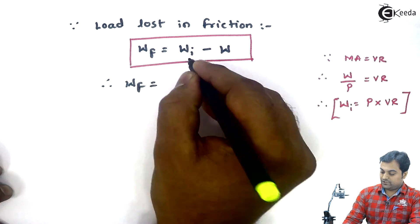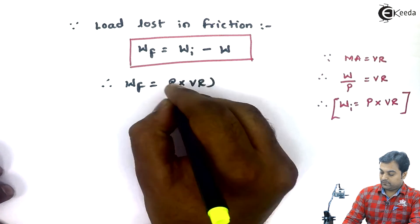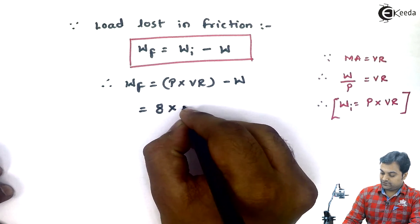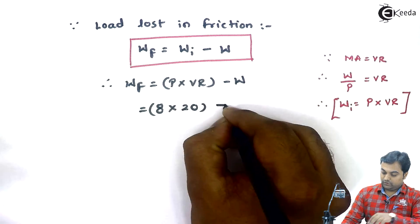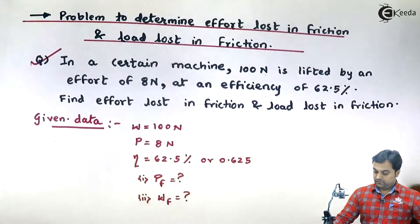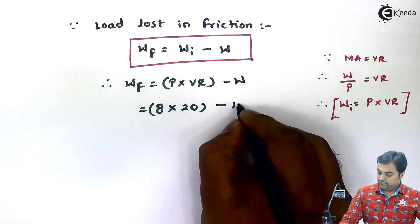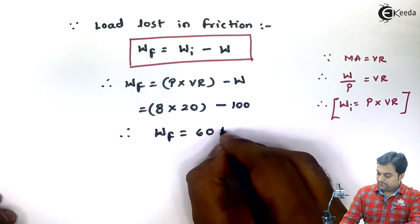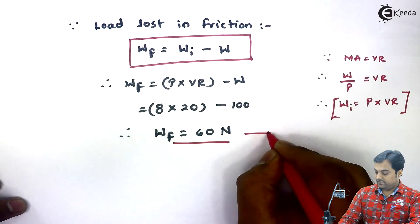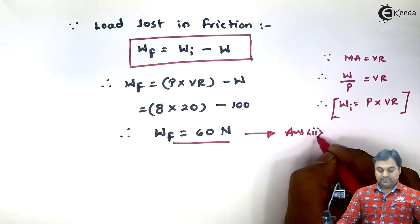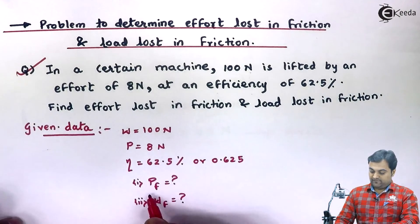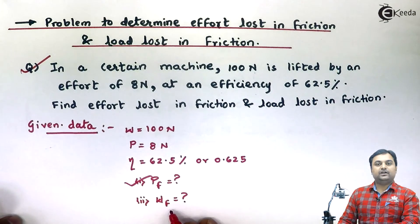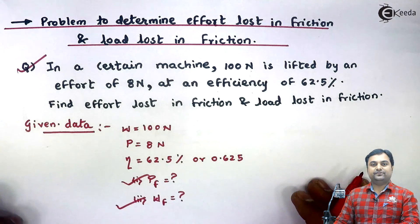Therefore load lost in friction = P × VR minus W = 8 × 20 minus 100 = 160 minus 100 = 60 Newton. So the second answer is load lost in friction = 60 Newton. To summarize: effort lost in friction is 3 Newton and load lost in friction is 60 Newton. With this we complete the problem.